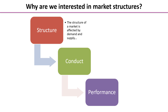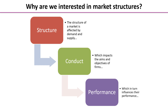The structure of the market is affected by demand and supply — the levels of demand, where demand comes from, the means of supply, and how many different firms are in the market. That has an impact on the aims and objectives of those firms, which in turn influences the way the business performs in its market.